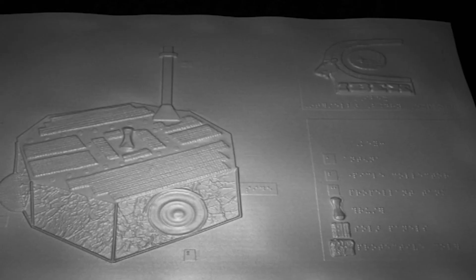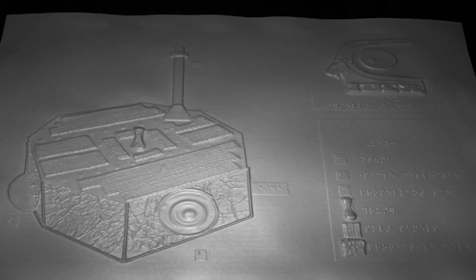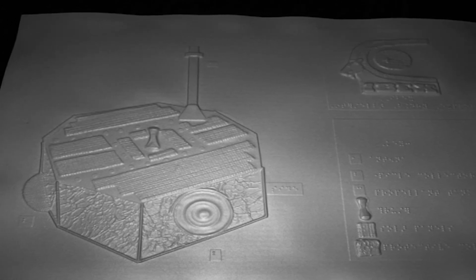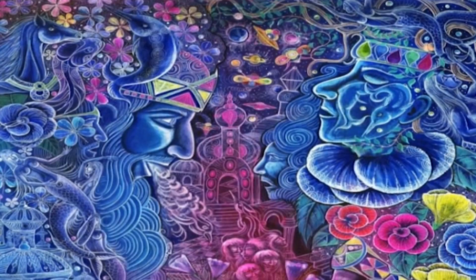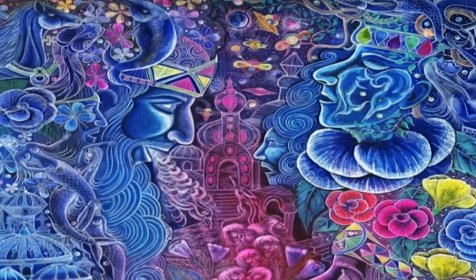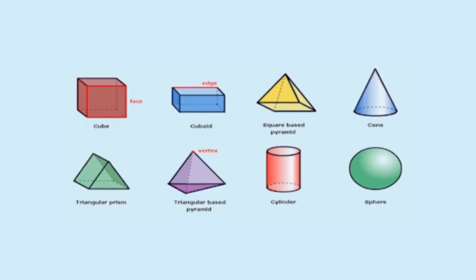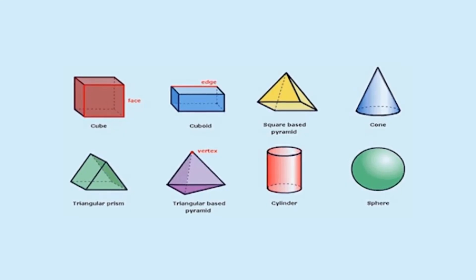Tactile diagrams translate images into a tactile language; they are not exact relief reproductions of visual images. Tactile diagrams allow people to access visual information in works of art, maps, diagrams, and three-dimensional objects. Learning to read tactile diagrams is essential for visually impaired students, as it strengthens the skills necessary to read tactile maps, mathematical diagrams, geometrical diagrams, and graphs.